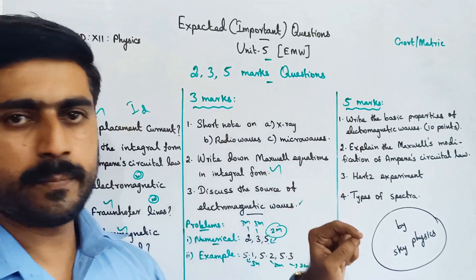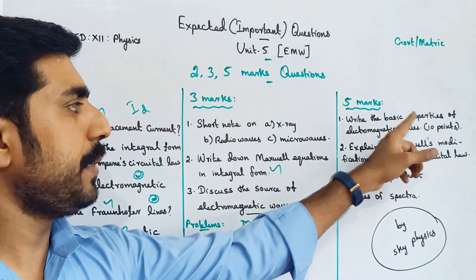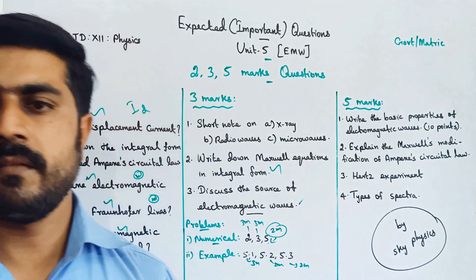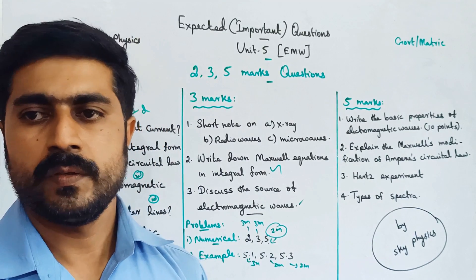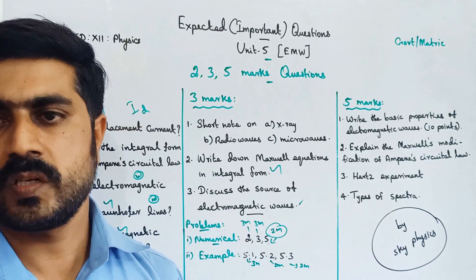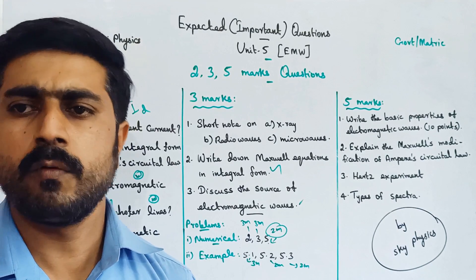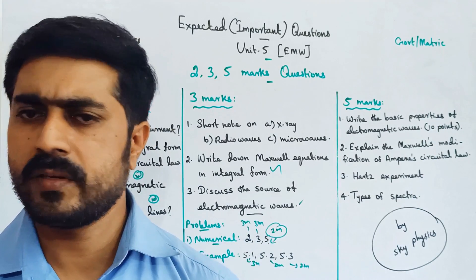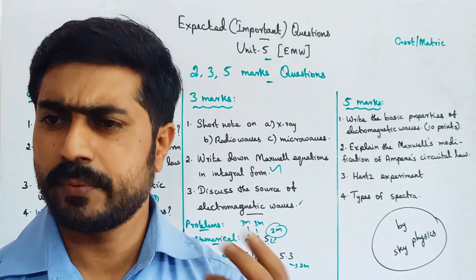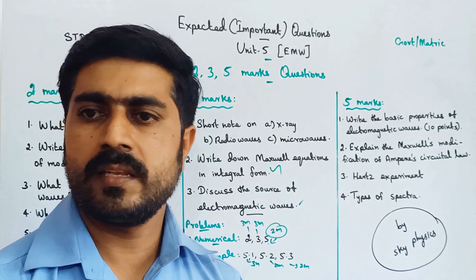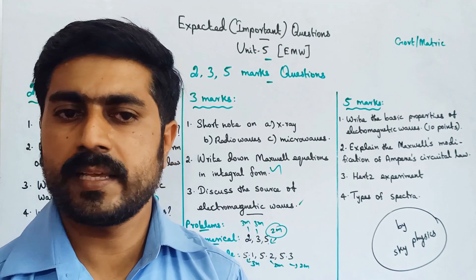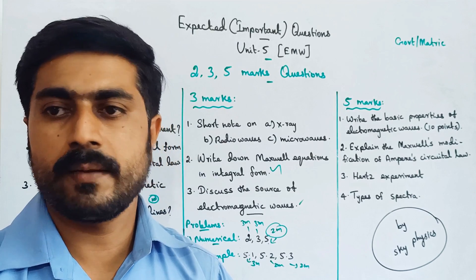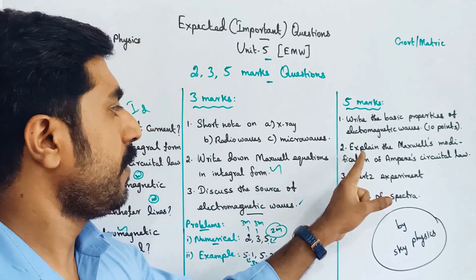For 5 marks: write the basic properties of electromagnetic waves. You have about 15 points total, with 10 points needed. Each point is half a mark, so 10 to 11 points will give you 5 marks. One point is one mark, and the remaining 10 points cover the answer.